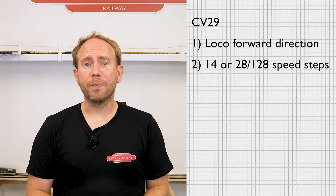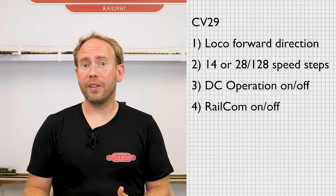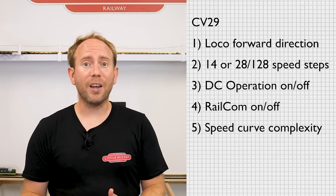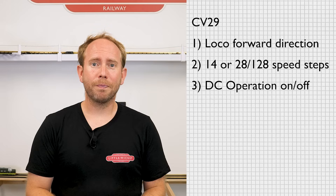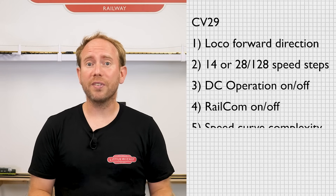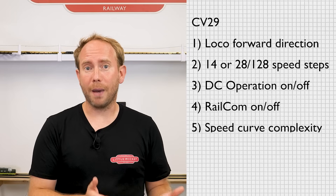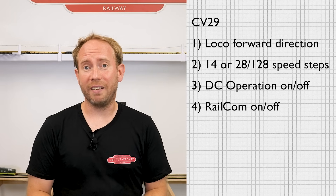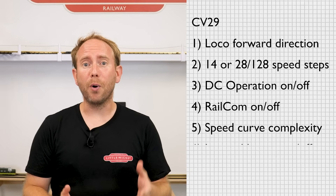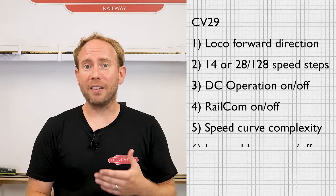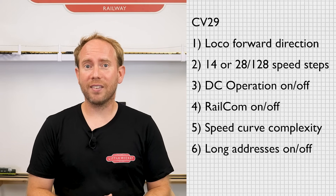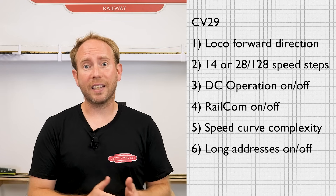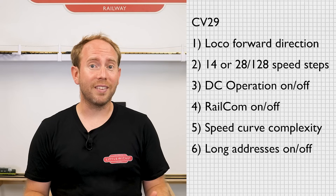You can select the number of speed steps — either 14, which is rarely used these days, or 28 or 128, which is far more common. You can turn DC operation on or off, telling the decoder whether it should respond to a DC signal. Having DC turned on can be useful if you ever run your loco on a DC layout, but it can sometimes cause issues if you fit stay-alives. You can turn RailCom on or off if the decoder supports it — RailCom was developed by Lenz and allows decoders to send messages back to the command station. You can also choose between a simple speed setup or a more complex speed curve, giving you more control over motor speed at different speed steps. Finally, you can turn on long loco addressing — CV1 holds the short address up to 127, while long addressing allows addresses up to around 10,000.